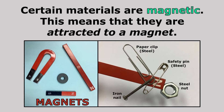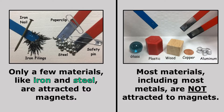Magnets come in many shapes and sizes, but only certain materials are magnetic — meaning they are attracted to a magnet. Only a few materials like iron and steel are attracted to magnets. So all of the things you see here that are attracted to a magnet, including the nail, the paper clip, and the safety pin, are all made of iron and steel. But most materials, including most metals, are not attracted to magnets. That's why the glass, plastic, wood, and even the copper and aluminum are not being attracted to those magnets.